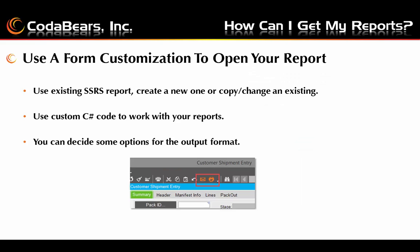The last example is going to be using a form customization to open your reports. Again, you can use an existing SSRS report or create a new one or copy and change an existing report. You would use custom C# code to work with your reports. With the custom code you can decide on options for the output format — for example, you could output to PDF, Word, or Excel.